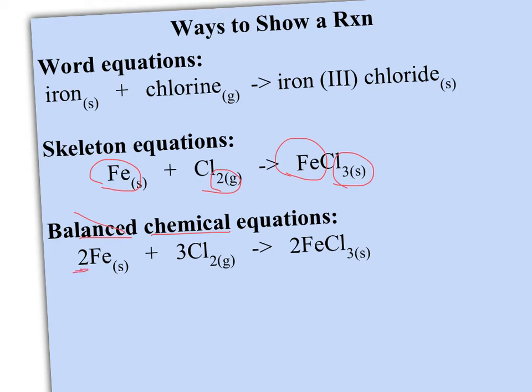To get it balanced, we need to use these numbers in front called coefficients. So now what my balanced chemical equation is showing me is that I have 2 separate iron atoms. I have chlorine gas, which consists of 2 chlorines bonded to each other, and I have 3 of those chlorine molecules. And together, those 2 iron atoms and 3 chlorine molecules can form 2 molecules that have Fe donating 3 electrons to chlorine. So if you count up, you see I had 2 iron atoms on the left side. I still have 2 iron atoms in the products. I had 6 chlorine atoms on the left side. I have 6 chlorine atoms in the products.